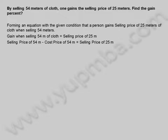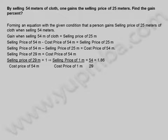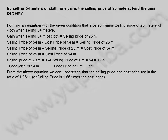Gain when selling 54 meters of cloth is equal to selling price of 25 meters. Selling price of 54 meters minus cost price of 54 meters is equal to selling price of 25 meters. Selling price of 29 meters is equal to cost price of 54 meters. Selling price of 29 meters divided by cost price of 54 meters is equal to 1, which implies selling price of 1 meter divided by cost price of 1 meter is equal to 54 by 29, which equals 1.86. From the above equation, the selling price and cost price are in the ratio of 1.86:1.